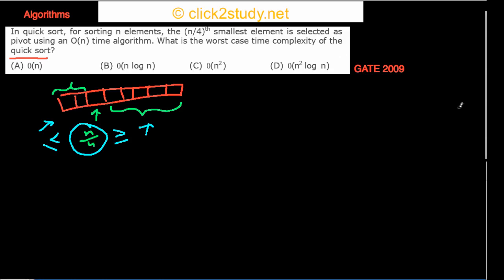If you try to build a recurrence relation for the case when you have used the n/4 smallest element, T(n) equals — you have to sort the array on the left, which has about n/4 elements, so you get T(n/4). It's about n/4 because the pivot is one extra element.